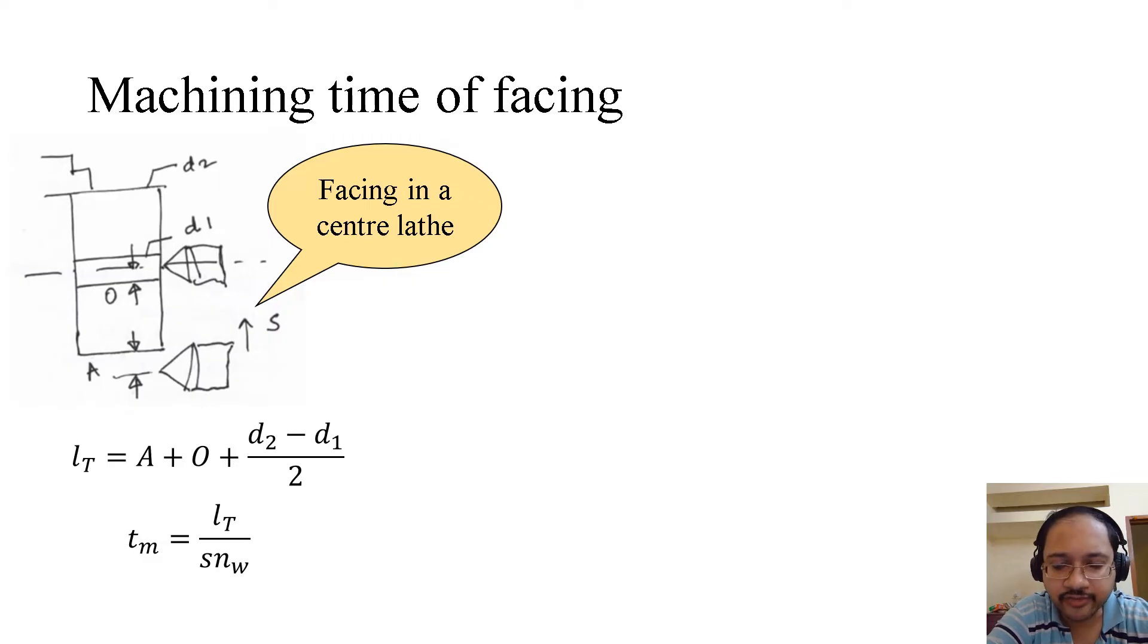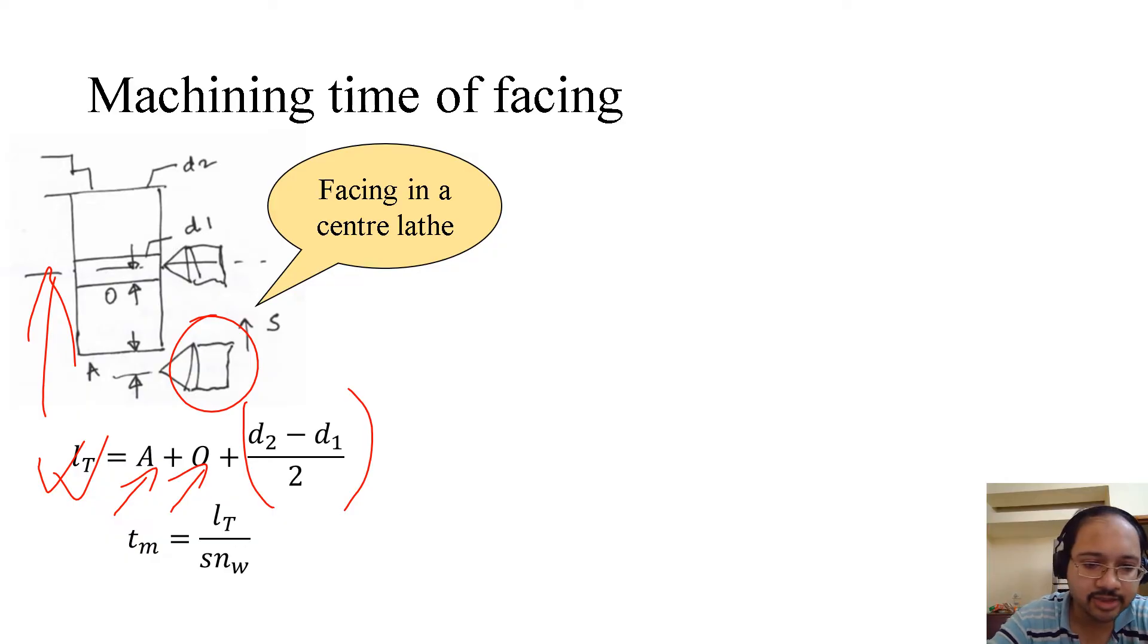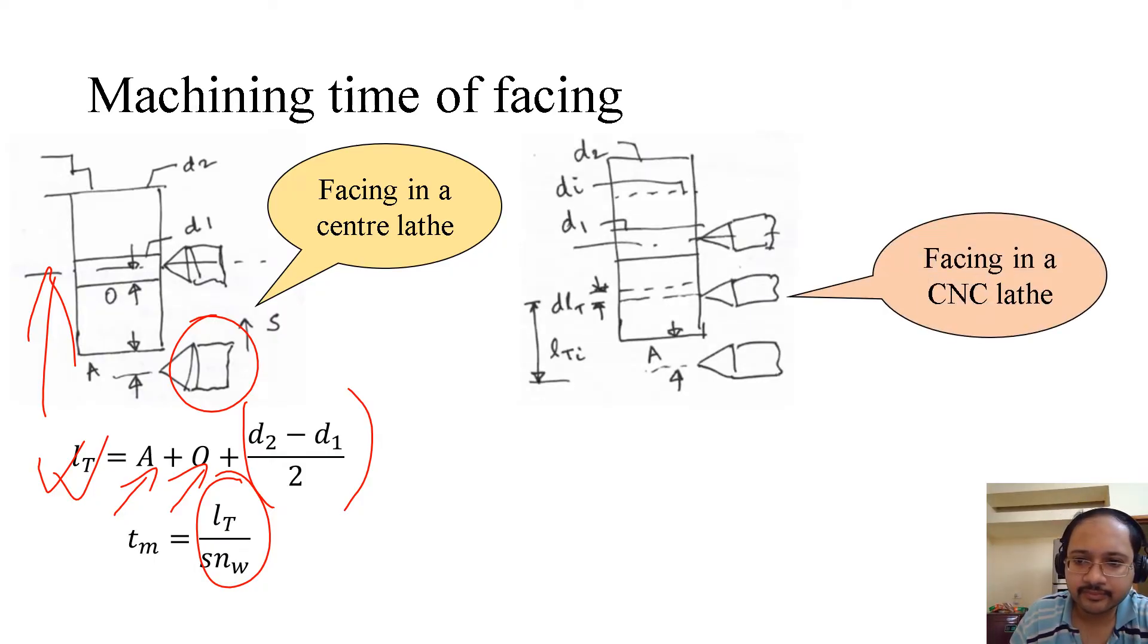Coming to machining time of facing, we can see here the tool which is fed in this direction and the total tool travel becomes A, the approach plus the over travel plus (d2 minus d1)/2, the difference of the diameters. The total machining time becomes LT over SNW. What is SNW? SNW is the feed velocity.